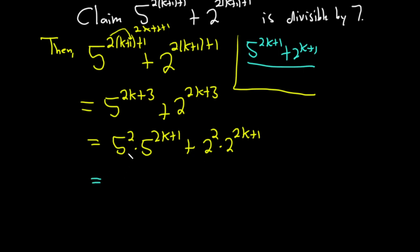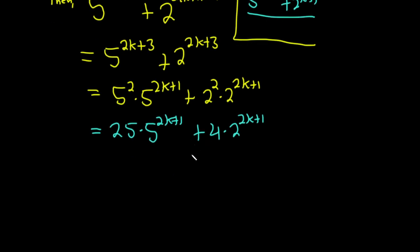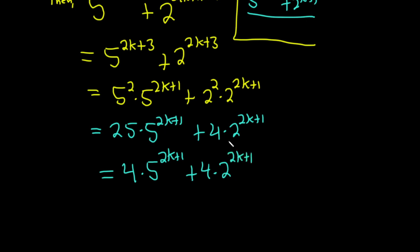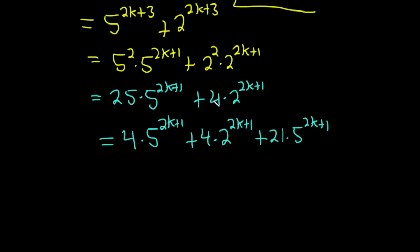If we had the same number in front of both terms, we could factor it out. We can borrow 4 from the 25: that gives 4 times 5 to the 2k plus 1, plus 4 times 2 to the 2k plus 1. This equation isn't complete — we have 4 of these but need 25, so we need 21 more. We did this because we want to factor out the same number from both terms so we can use the induction hypothesis. 21 plus 4 is 25.